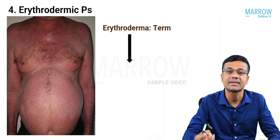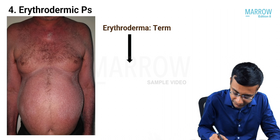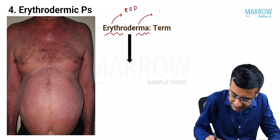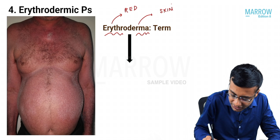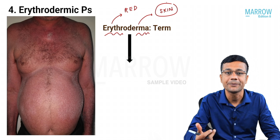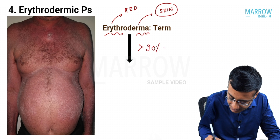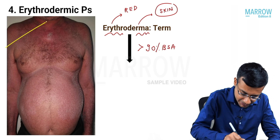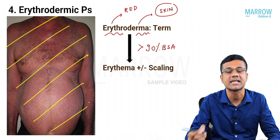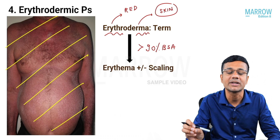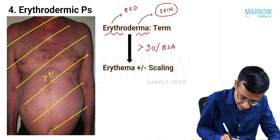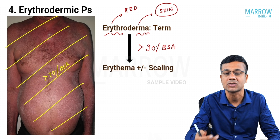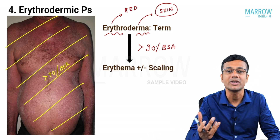The next form is erythrodermic psoriasis. 'Erythro' means red and 'derma' means skin. In dermatology, the word erythroderma is used whenever more than 90% of the body surface area is showing erythema with or without scaling. When more than 90% of the body surface area is involved, it is called erythroderma, and this type is called erythrodermic psoriasis.